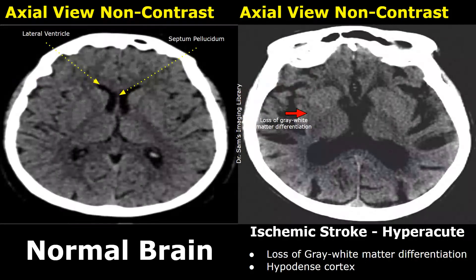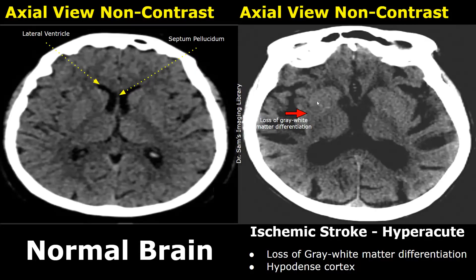In a hyperacute ischemic stroke, the time from onset can be between 6 to 24 hours. Its features include loss of gray-white matter differentiation. Normally you will see a slightly hyperdense outer layer of the brain — that is the gray matter — and a hypodense central area, which is the white matter. Normally we are able to see both gray matter and white matter separately, but in cases of hyperacute ischemic stroke, we may find it harder to differentiate between the gray matter and white matter in the affected area.